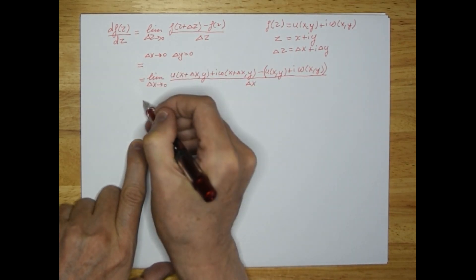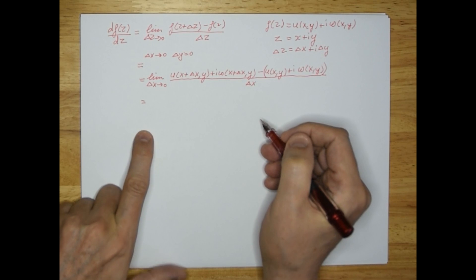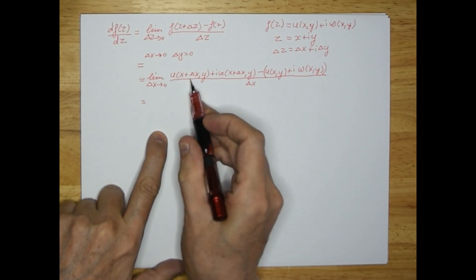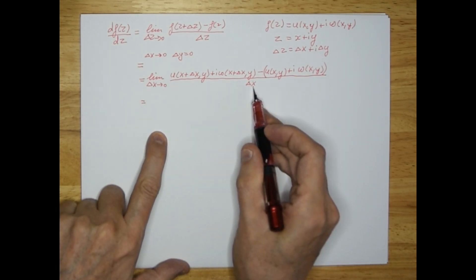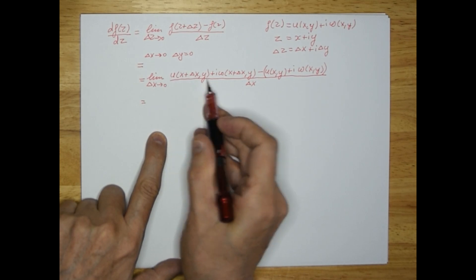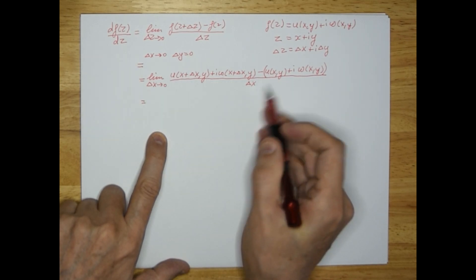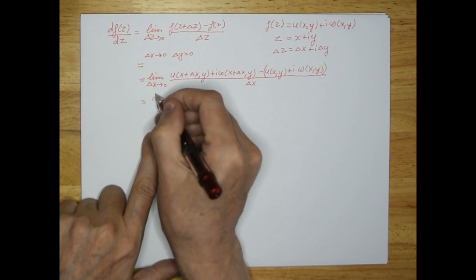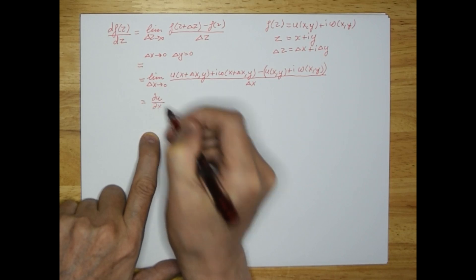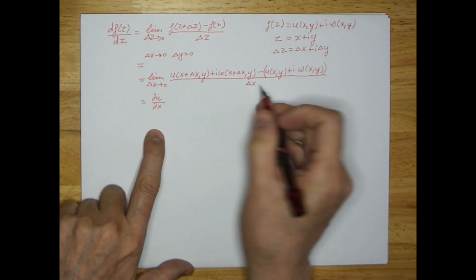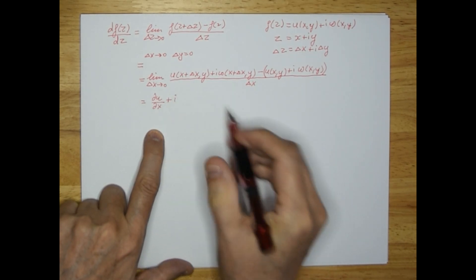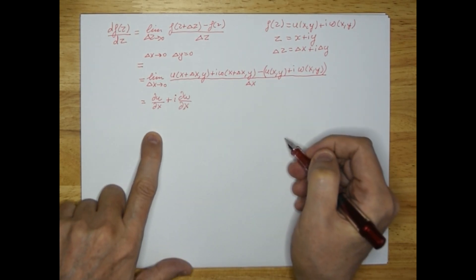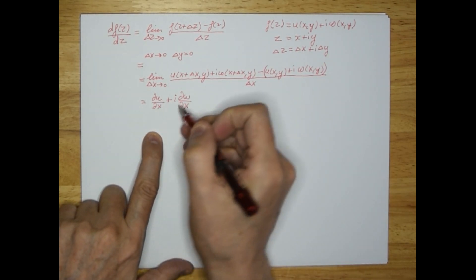If you look carefully, you will see two definitions of differentiation. There's a differentiation of u with respect to delta x: u(x + delta x, y) minus u(x, y) divided by delta x, in the limit as delta x goes to zero — that's essentially du/dx. And there's also an i·dw/dx. So you get du/dx plus i·dw/dx when you look at variations in delta x.